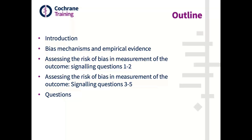I will first do a very short introduction related to the overall risk of bias tool. Then I will present some of the bias mechanisms linked to this domain and empirical evidence, and tackle more specifically the signaling questions one and two related to this domain. Then I will give it over to Asbjorn Rob Jackson, who will tackle all the issues related to blinding with signaling questions three to five. We will end with questions.